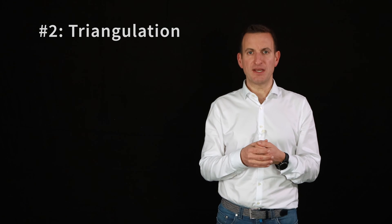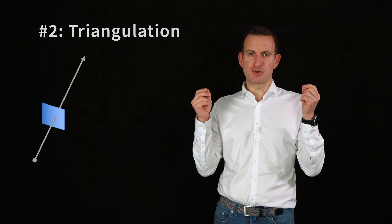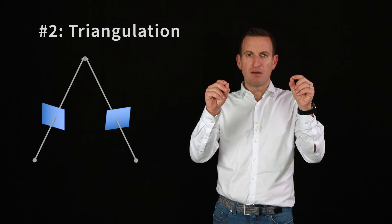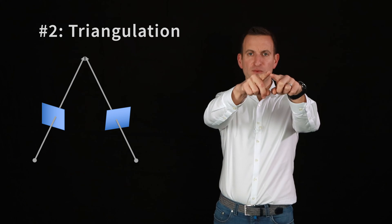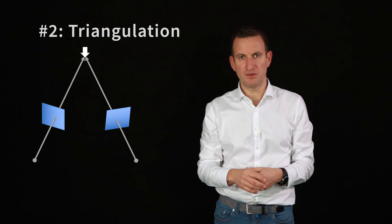Then, once we have that relative orientation so we know where camera two sits with respect to camera number one, we can perform triangulation. Triangulation means we are virtually shooting rays from the projection center of our two cameras through the image plane, through the pixels of a corresponding point, into the 3D world. Where those rays intersect in the 3D world, there is the point that we want to compute.